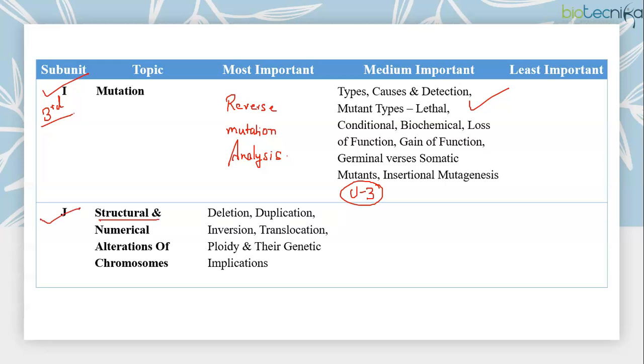Then subunit J is about structural and numerical alterations of chromosomes. So here you study about deletion, duplication, inversion, translocation, aneuploidy, polyploidy. And specially from this particular subunit, questions on pericentric or paracentric inversion is most frequently asked.